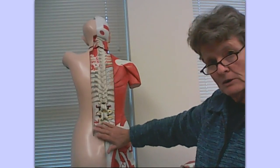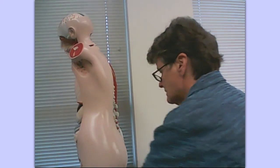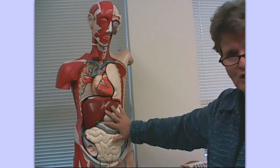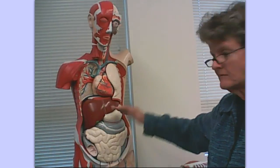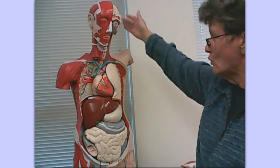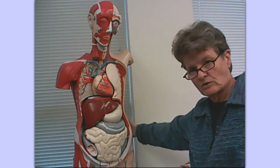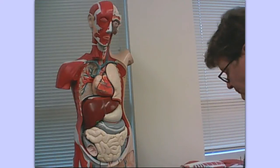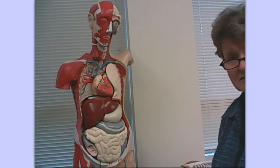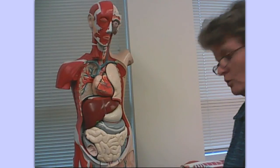Dorsal and posterior are very similar — they mean basically the same thing. This is the anterior or ventral half. As we divided this half with a coronal section, this would be anterior and this would be posterior. Anterior is the same as ventral, and posterior is the same as dorsal.